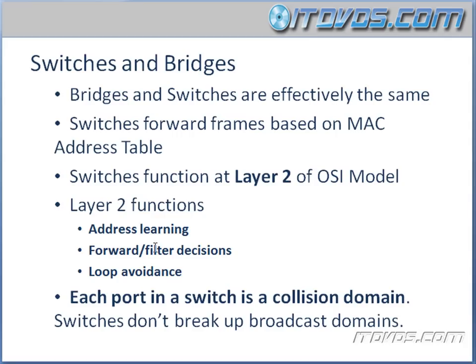Address learning is the learning of MAC addresses so the switch knows which port to forward information out. Forward and filter decisions mean we can actually set up rules to forward or not forward certain data based on MAC address. And loop avoidance is something we'll get into when we talk about the spanning tree protocol. Again, each port in a switch is a collision domain — that's very important.